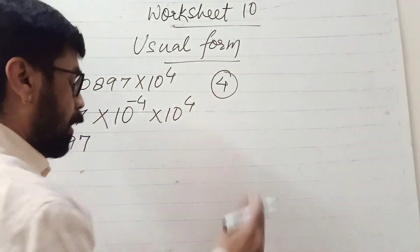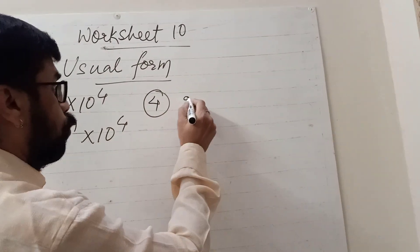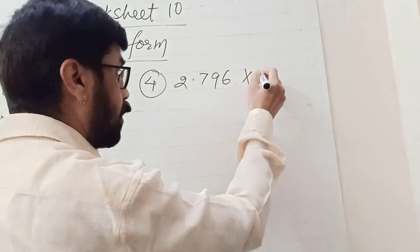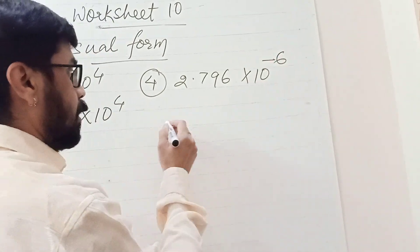For the fourth question: 2.796 × 10^-6. Since the power is negative, the decimal will shift towards the left-hand side.